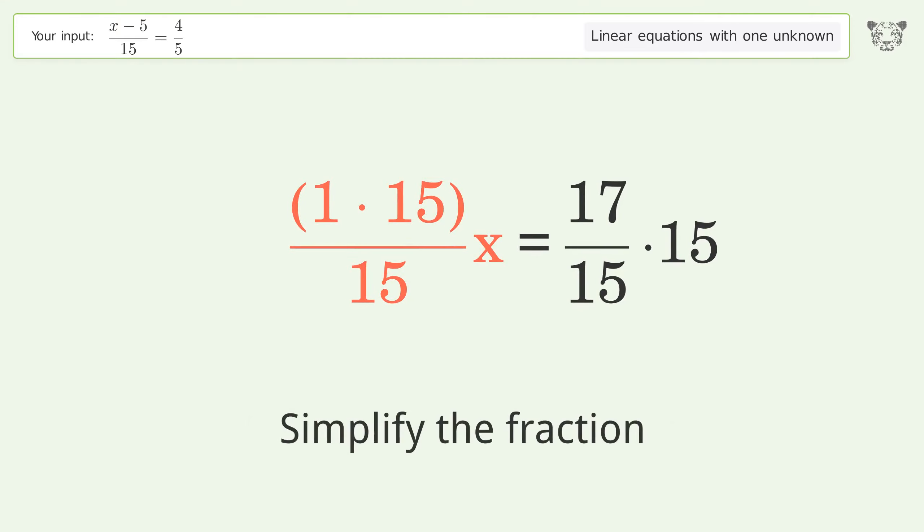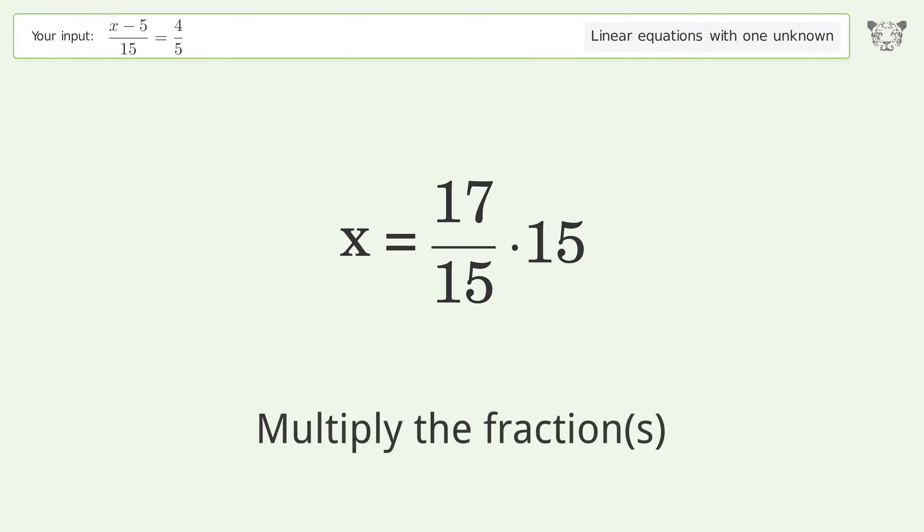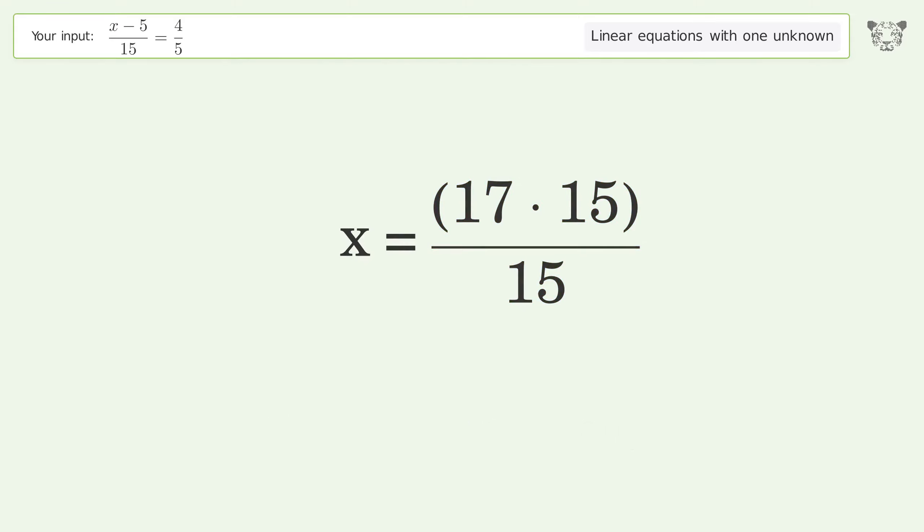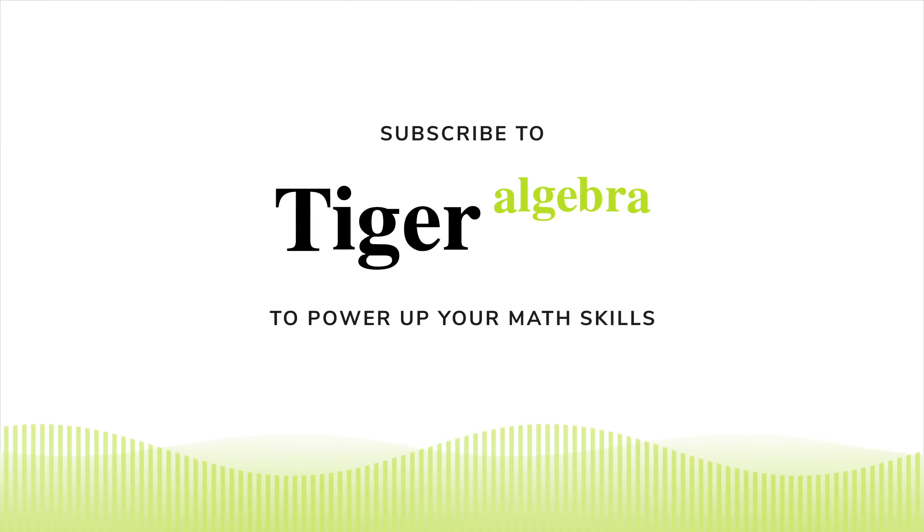Simplify the fraction. Multiply the fractions. Simplify the arithmetic. And so the final result is x equals 17.